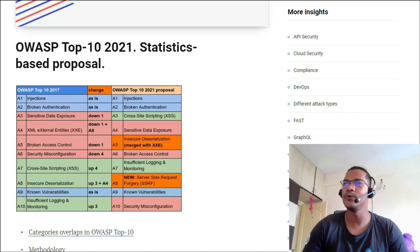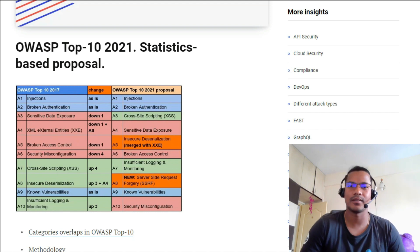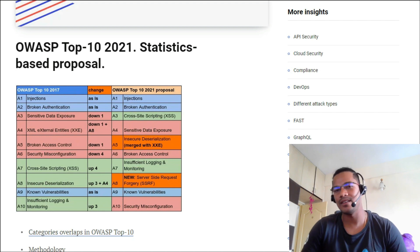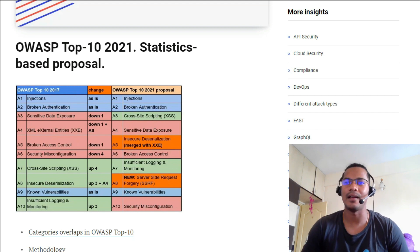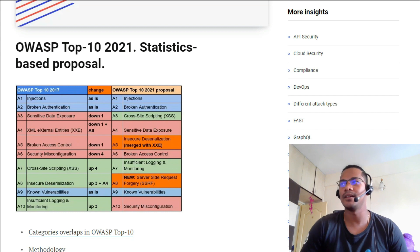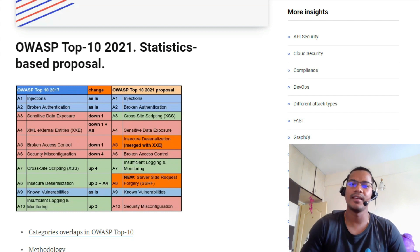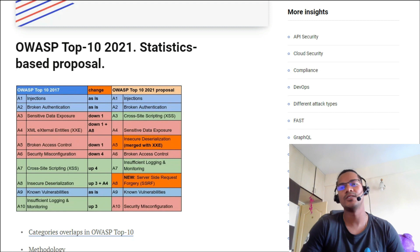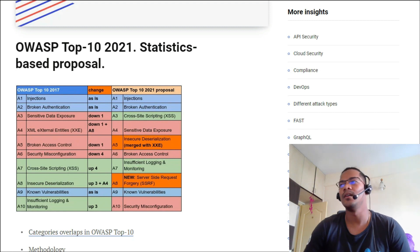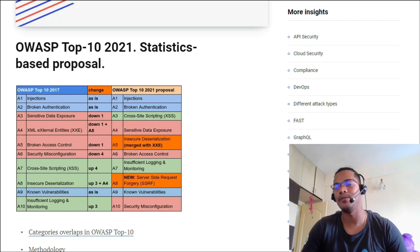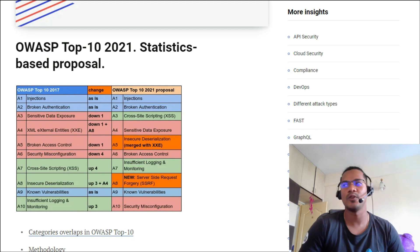A new addition is A8: SSRF (Server-Side Request Forgery). I feel like this should be there, and I'm really happy they included SSRF. Then A9 is known vulnerabilities, which was also there earlier and is handled similarly. Finally, A10 is security misconfiguration — a pretty standard move overall.